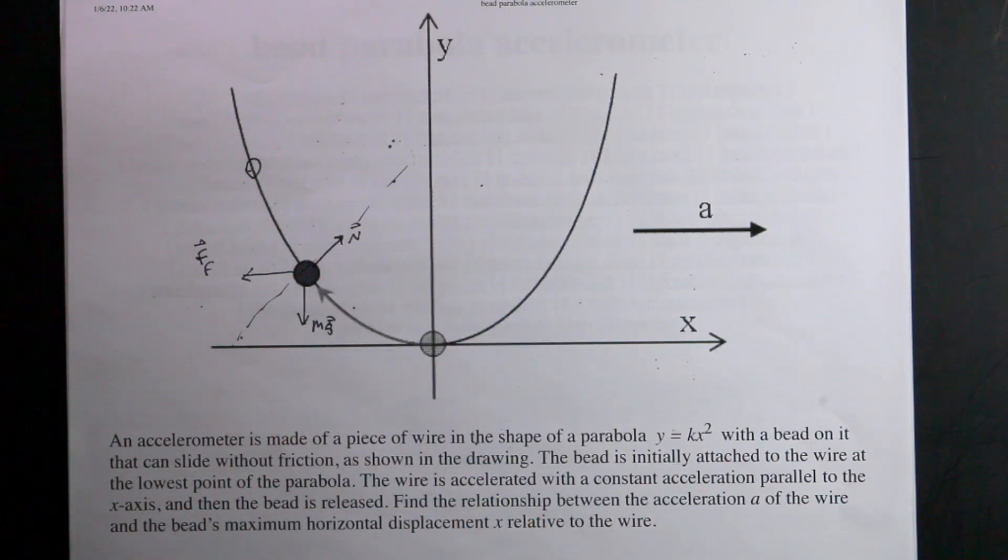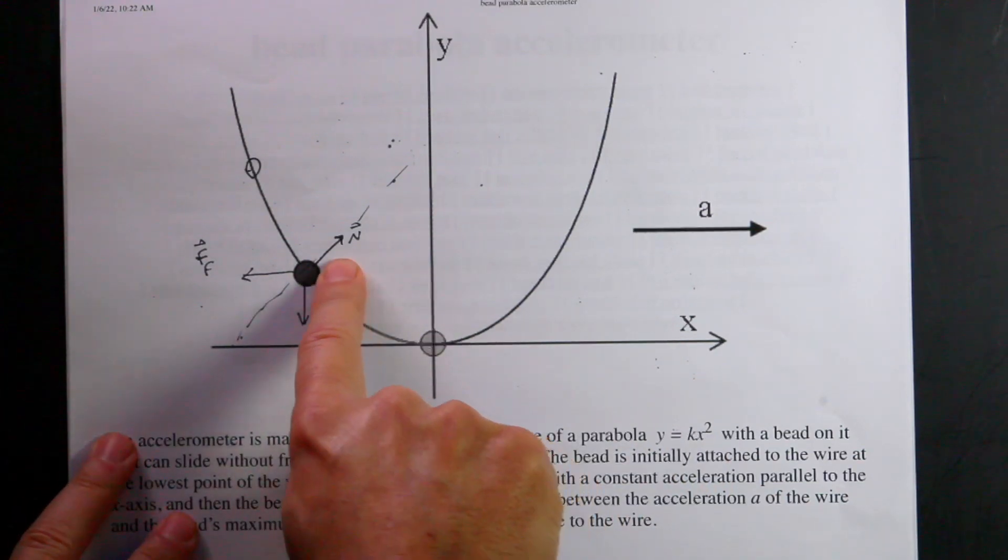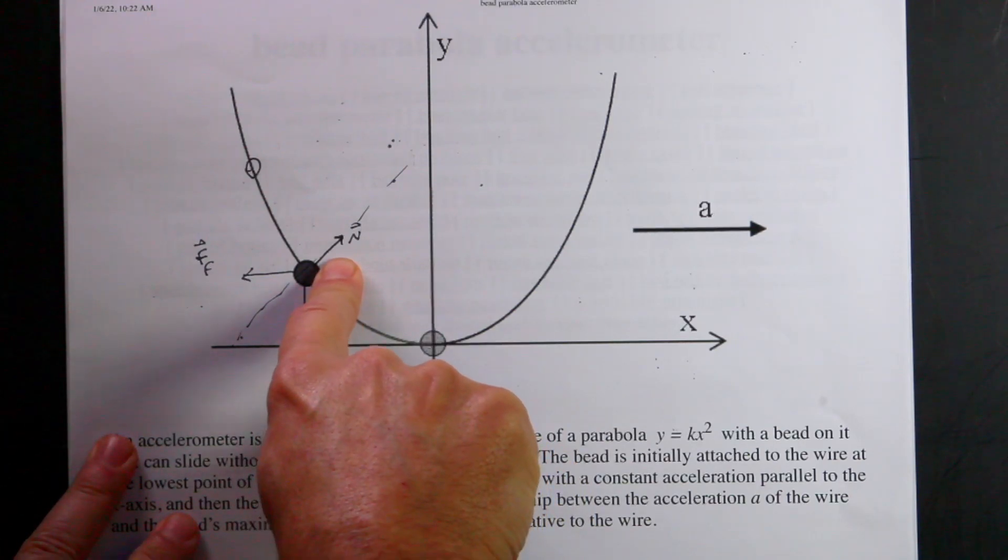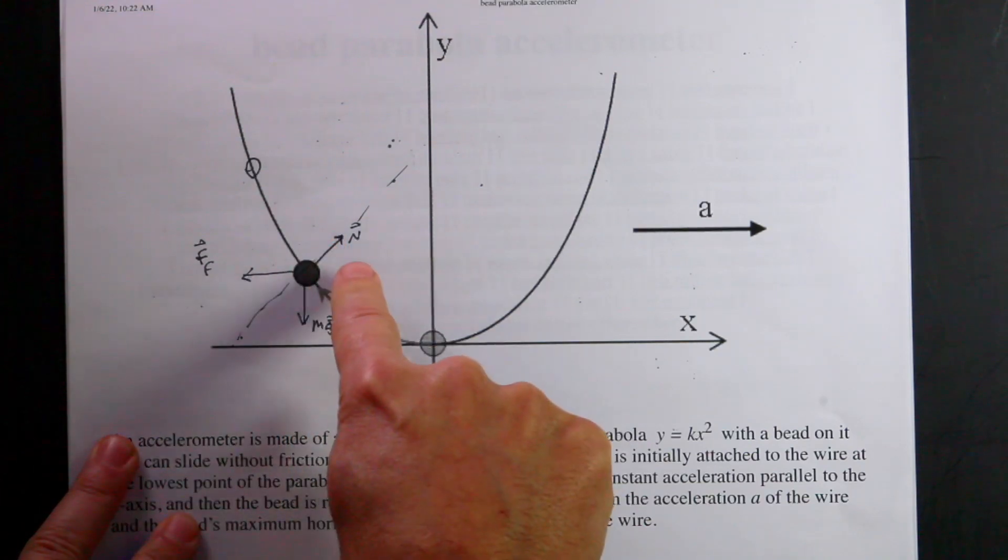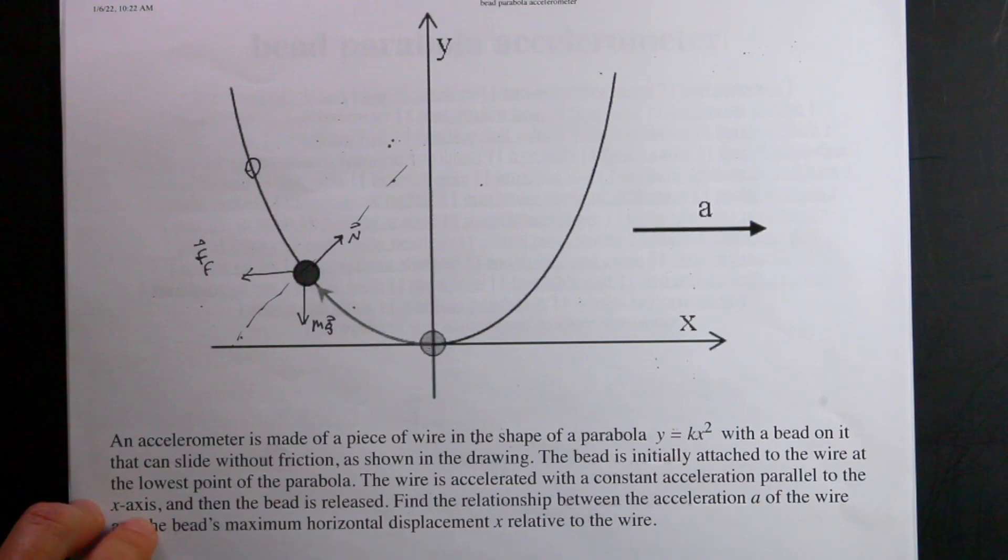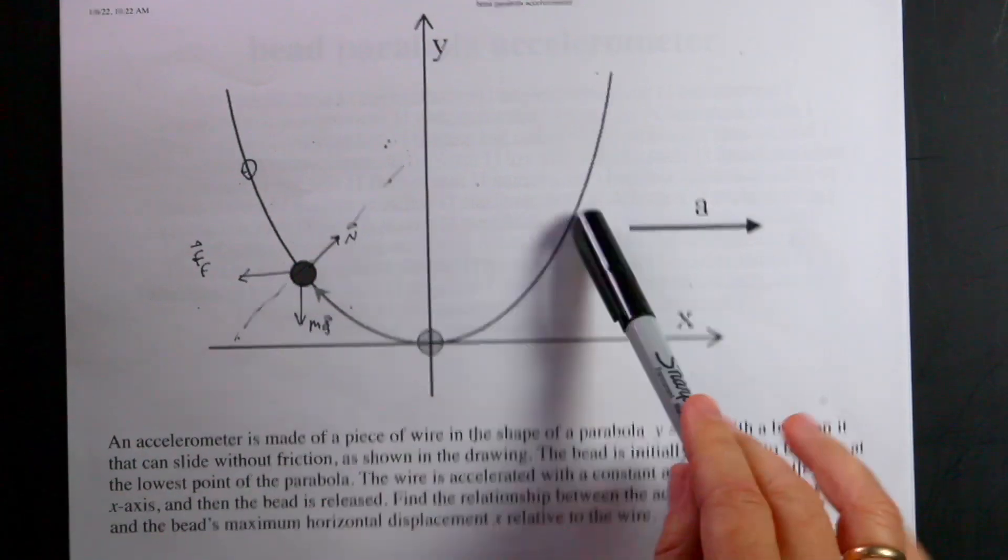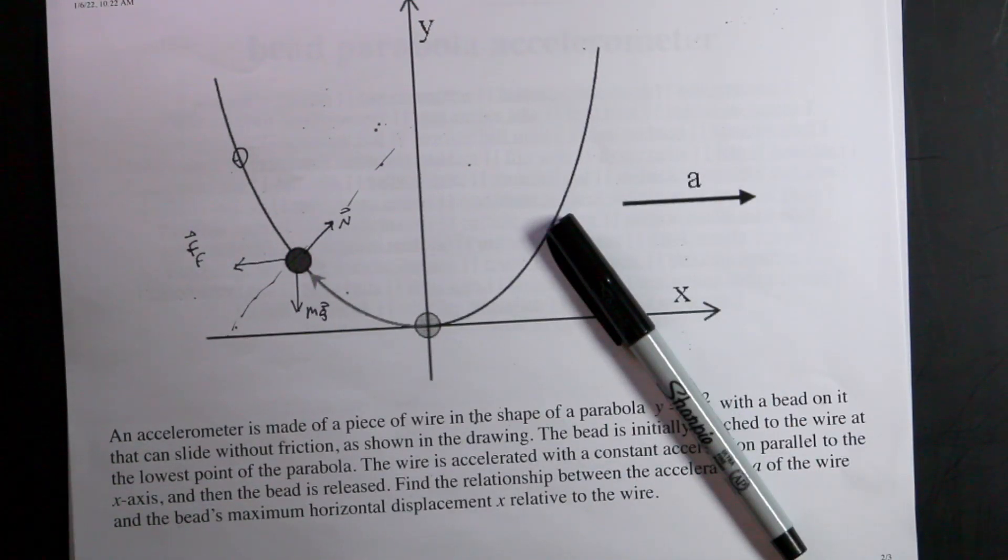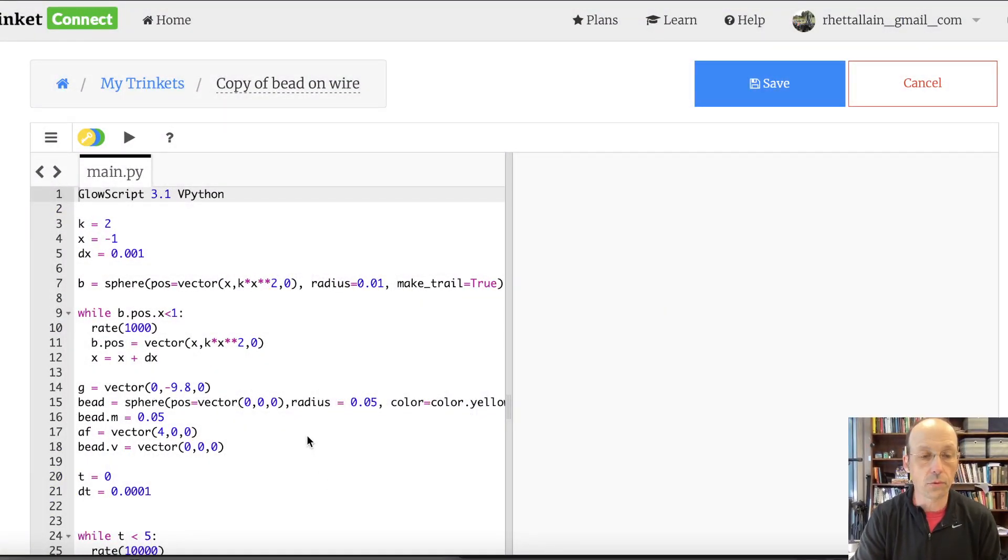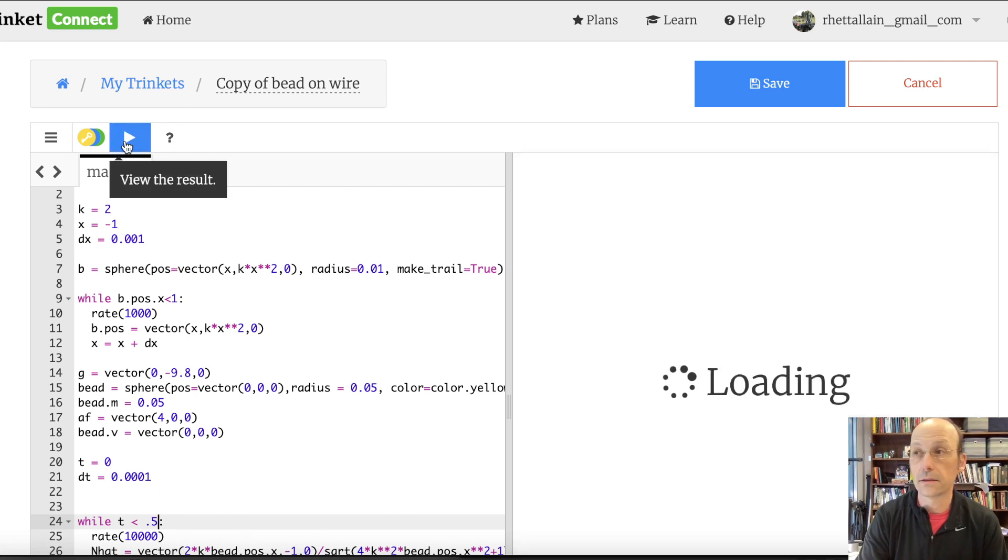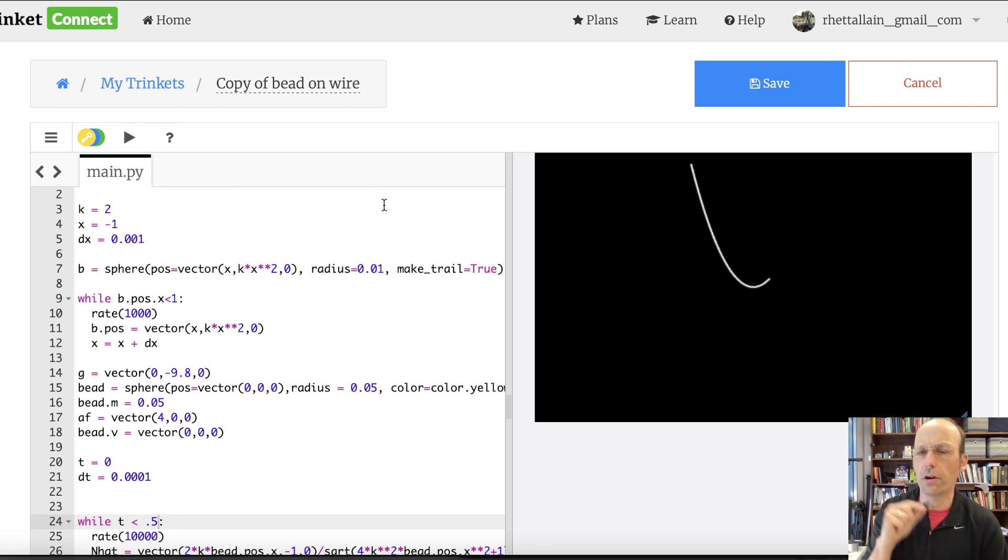Let me just show you that program real quick. Because I do want to do one thing. I want to add an arrow for the normal force so we can see if that's at least looking correct. So let's add, let's go to the program. I'm going to add an arrow for that normal force and see what happens. And then I think I know a better way to solve it. And I think I know what's wrong. Okay, so switching over here to Python. This is the program. Let me just do this real quick. I can run this for a half a second. So this first just draws the parabola.